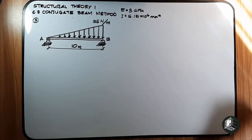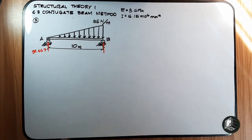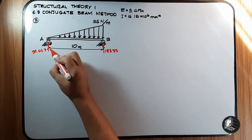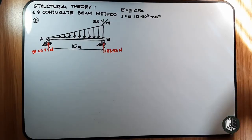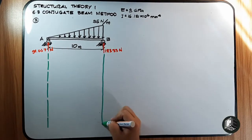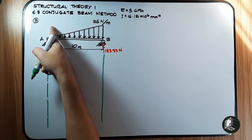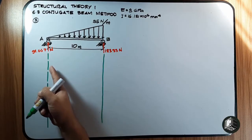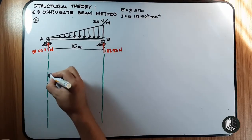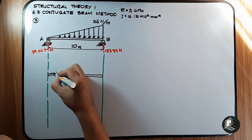Let's solve the reactions. The reaction at A is 91.667 N and at B is 183.33 N. It is easier to take the moment at B because we are looking for maximum deflection — it will be located between A and B, and x will be measured from A. So let's start drawing the diagram.